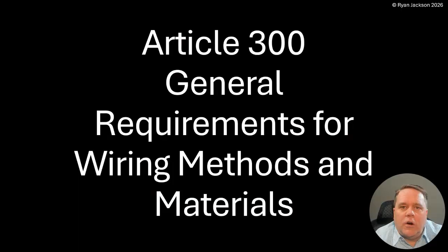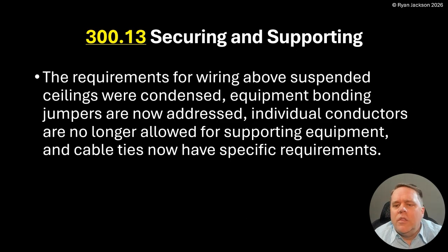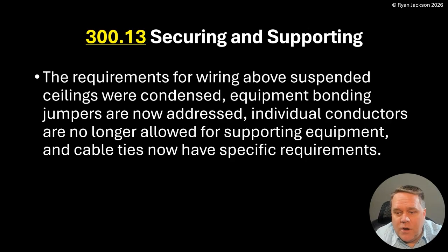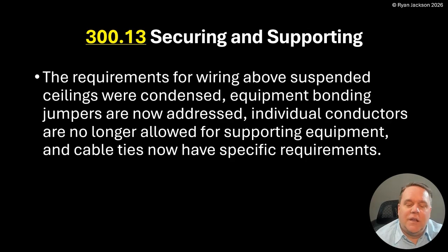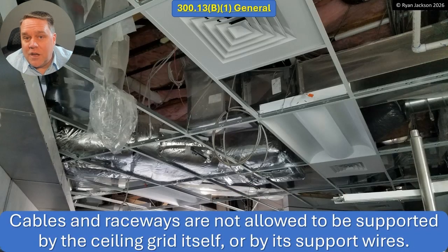Ryan Jackson here. Let's talk about 300.13, which is securing and supporting for wiring methods. There was a lot that happened here. If you look in your code book, there's a lot of gray text indicating changes, but really a lot of it was just consolidating the text. We did add some new requirements: requirements for wiring above suspended ceilings were condensed, equipment bonding jumpers are now addressed, individual conductors are no longer allowed for supporting equipment, and cable ties now have specific requirements.